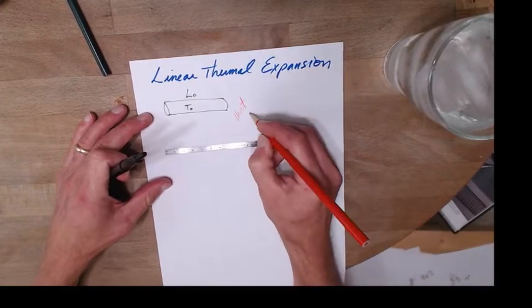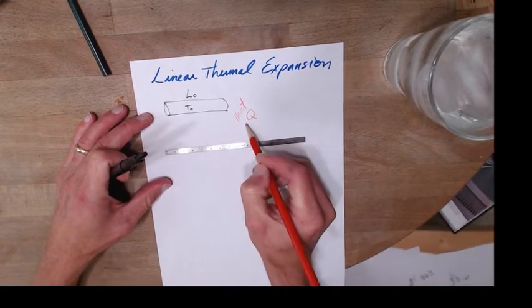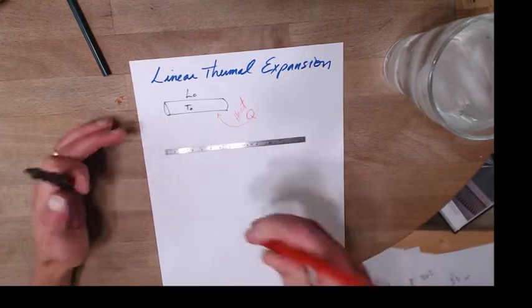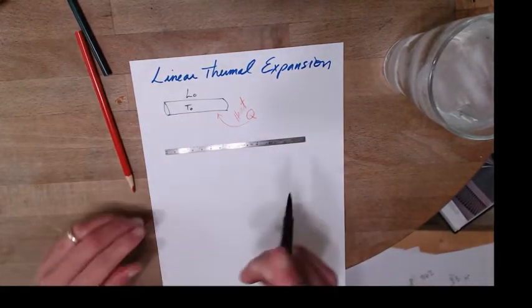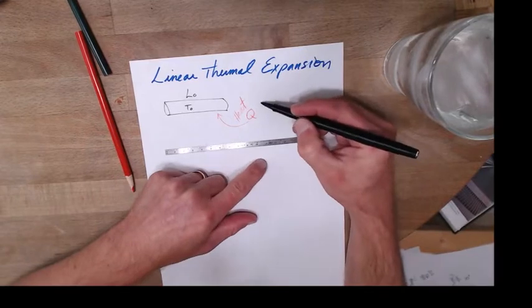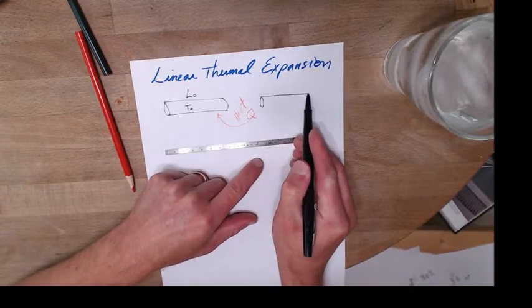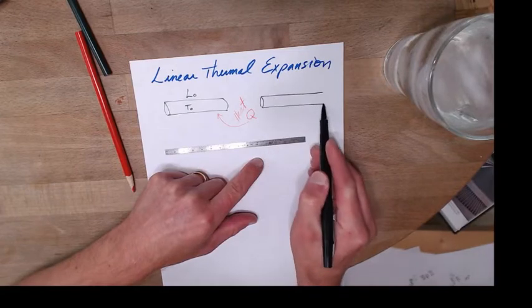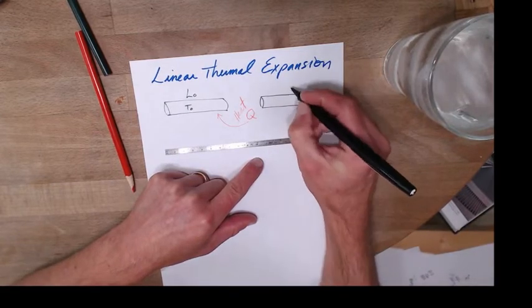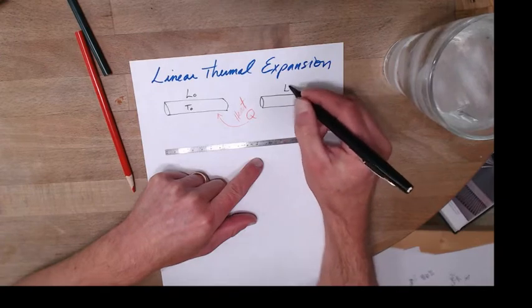The symbol for heat is Q and let's put some of that Q into there. So then what ends up happening, so now here's my rod that is now longer.